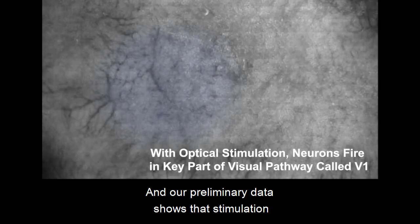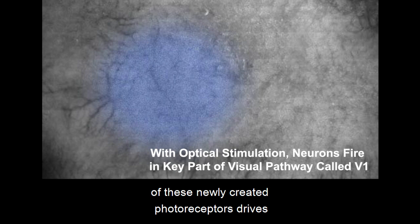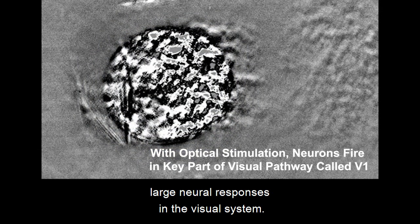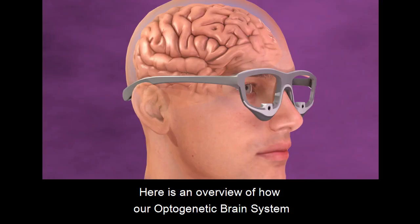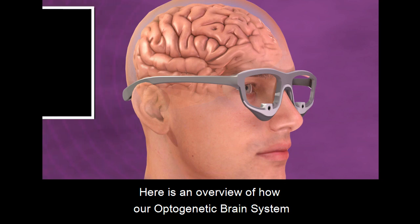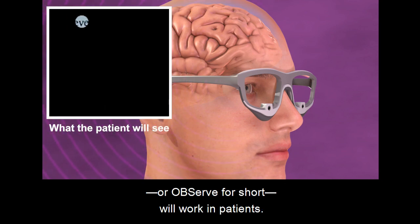And our preliminary data shows that stimulation of these newly created photoreceptors drives large neural responses in the visual system. Here is an overview of how our optogenetic brain system, or OBServe for short, will work in patients.